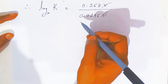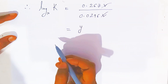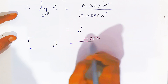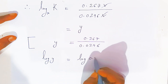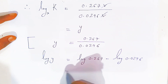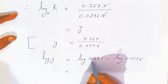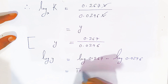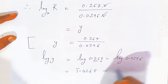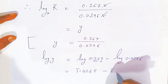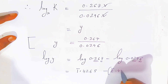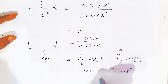To evaluate 0.267 divided by 0.0296 using the log table, we take log y equals log 0.267 minus log 0.0296. For log 0.267, the characteristic is bar 1 and mantissa is 4265. For log 0.0296, the characteristic is bar 2 and mantissa is 4713. Subtracting gives log y equals 0.9552.